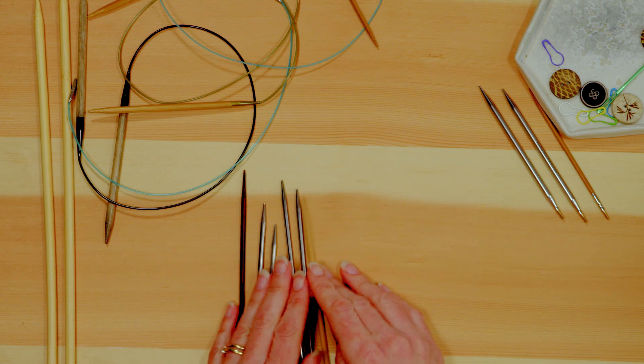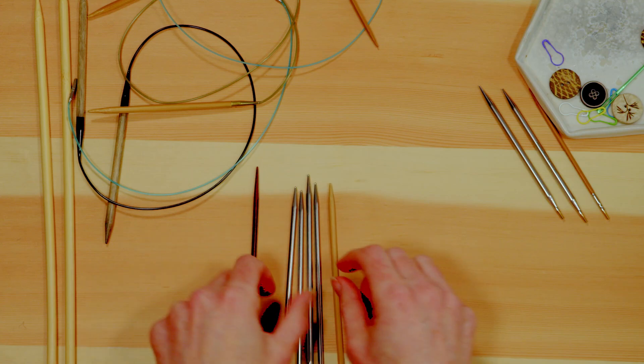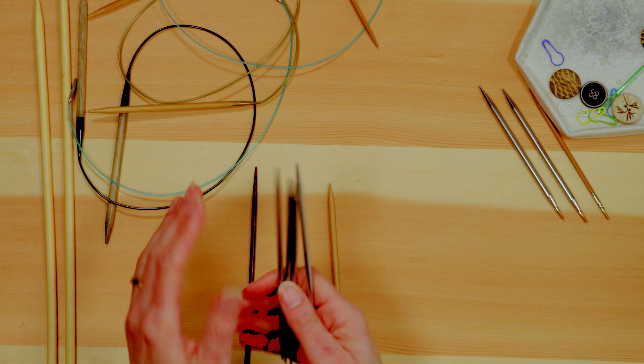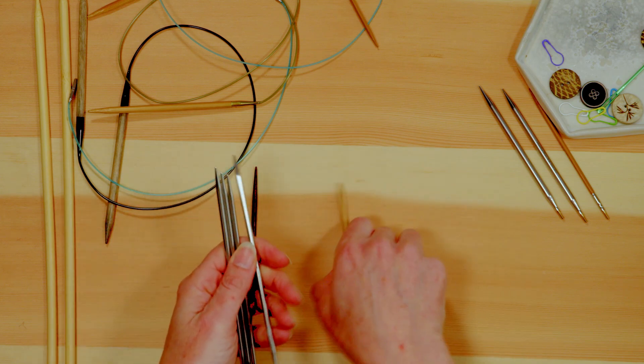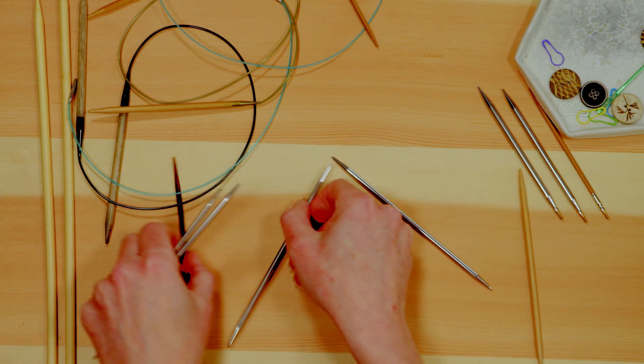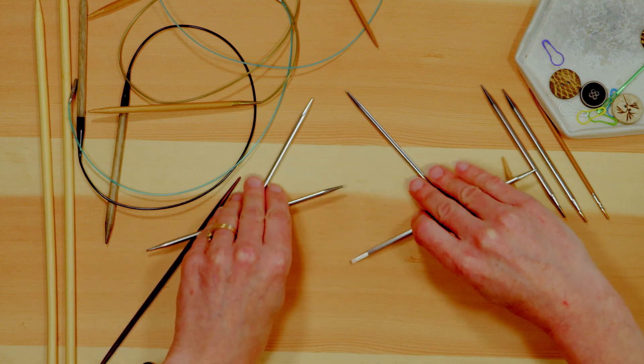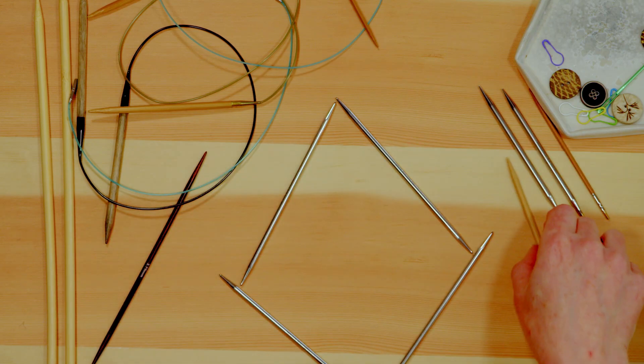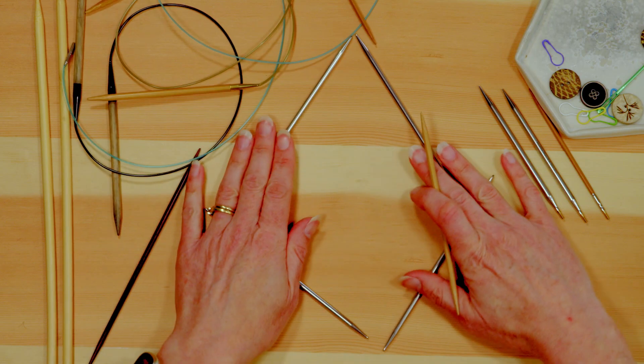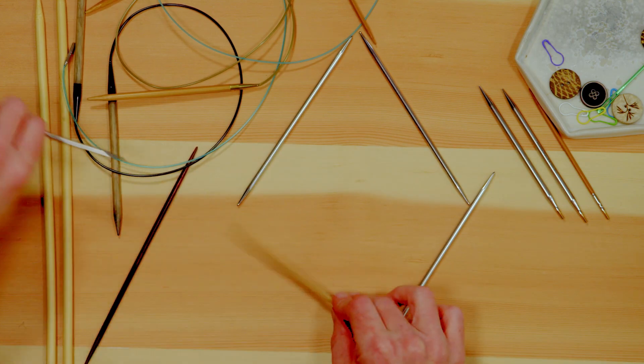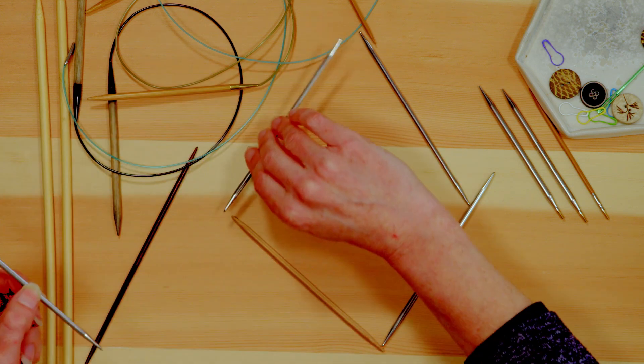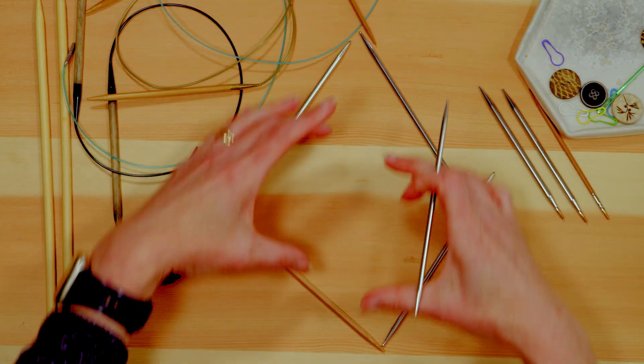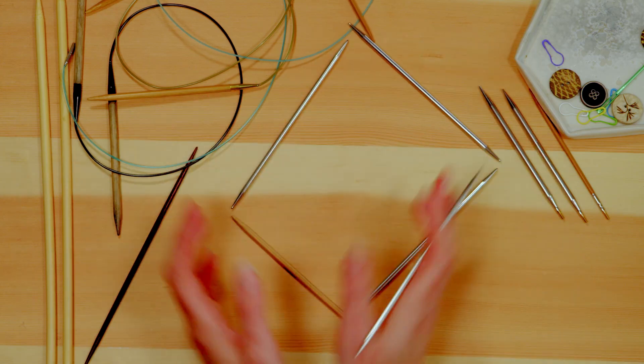These are known as double pointed needles for a pretty obvious reason and they're going to usually come in sets of four or five. You can use them for small circular knitting or for just very tiny little projects but the way you do it is you will take four of them and you would divide your knitting as you're knitting in a circle you'll put a quarter of it on each side and then you'll get one extra needle here and as you work along you'll knit on these and then that one will be gone the stitches will be here then you'll knit across here those will be gone they'll be on here and so you'll always have one extra stitch and those will approximate a circle by just having it divided around like that.